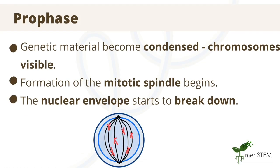During prophase, the genetic material within the cell's nucleus becomes condensed into chromosomes so that they do not become entangled with one another. There is also the beginning of the formation of mitotic spindles, which are involved in the next phase. And finally, the nuclear envelope starts to break down.